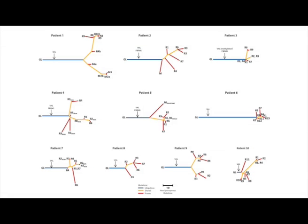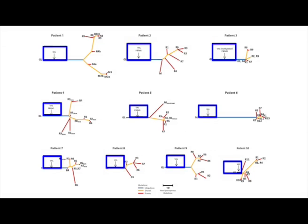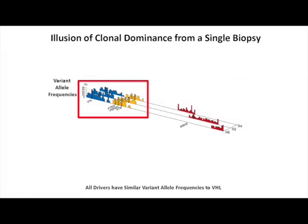In the context of clear cell carcinoma of the kidney, these truncal ubiquitous events are, quite simply, VHL. VHL mutation and 3P loss of heterozygosity are the core truncal events present in every sporadic tumor we've looked at. To identify these truncal events — and this gets a bit technical — we use next-generation sequencing, where a number of times we capture a mutation tells us about its prevalence within the cancer. That's called the variant allele frequency, VAF, ranging from 0% to 100%.